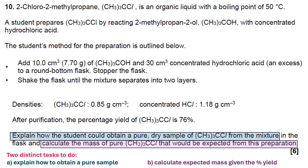As I take you through the different parts of the question, each part that I explain will be either blue — which is to do with explaining how to obtain a pure sample — or it will be purple, which is to do with how to calculate the expected mass given the percentage yield.